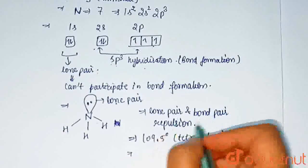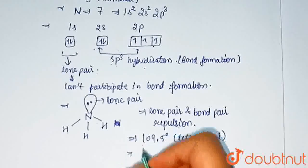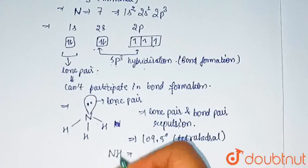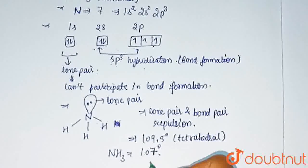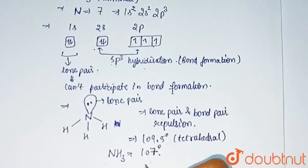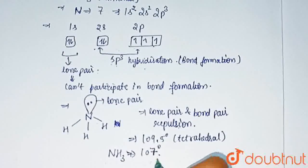But due to lone pair and bond pair repulsion, the angle of NH3 is 107 degrees. Due to lone pair and bond pair repulsion, the bond angle in NH3 is 107 degrees.